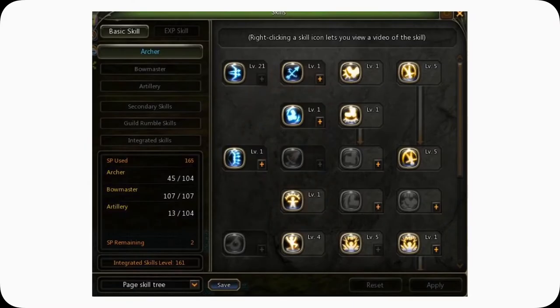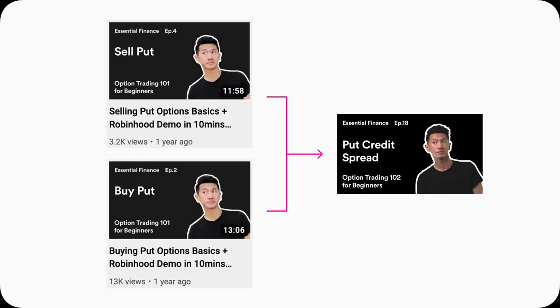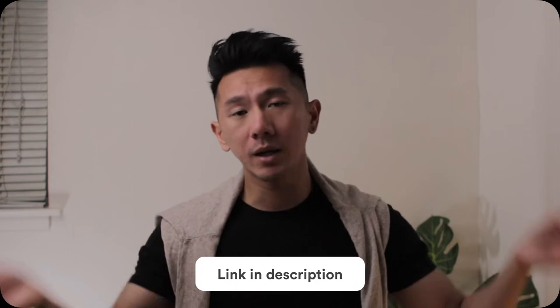Good morning, everyone. My name is Justin. I'm a designer working in Silicon Valley, and I'm here today to use design to help explain put credit spreads. Option trading is like a video game, and you will follow a skill tree. You do need to understand buying puts and selling puts before understanding put credit spreads, otherwise this video just doesn't make sense to you. I will have the links up here and in the description down below. You don't have to smash the like button just yet — do that at the end if you find this video useful and insightful.